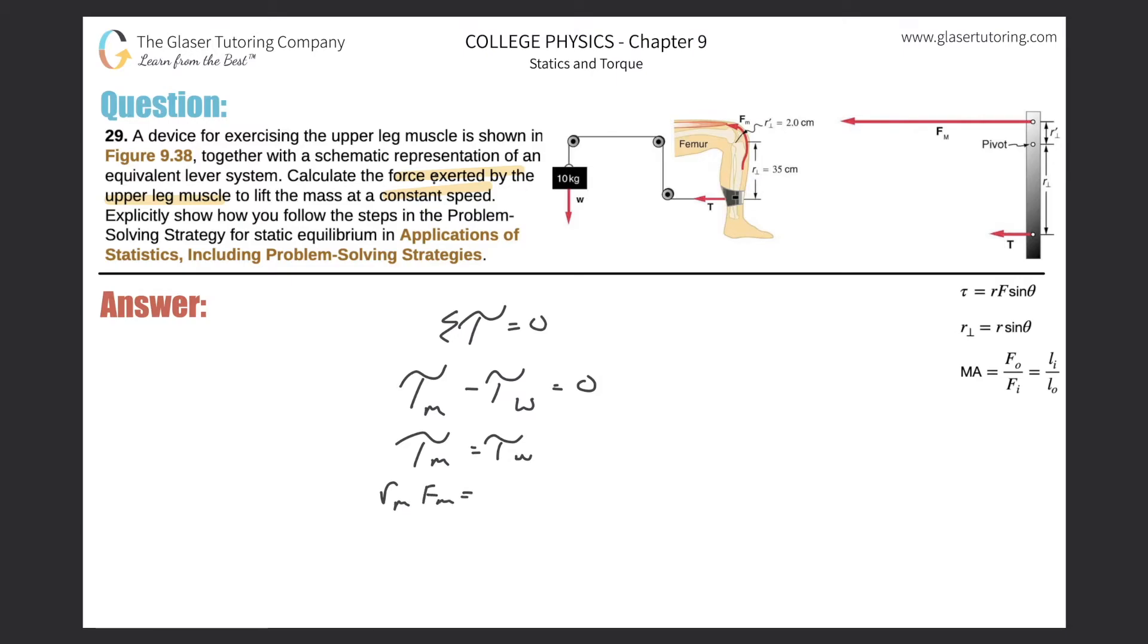When I substitute into my equation, the lever arm for the muscle multiplied by the force the muscle produces equals the lever arm of the tension multiplied by the force of that tension. To find the force of the muscle, we simply divide by the lever arm of the muscle on both sides.